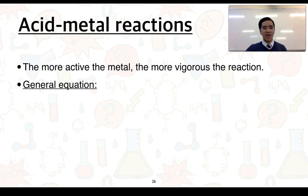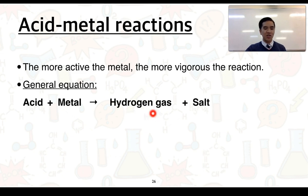In terms of acid-metal reactions, the more active the metal, the more vigorous the reaction. The general equation for this is an acid plus a metal will produce hydrogen gas and a salt, which will be in solution.